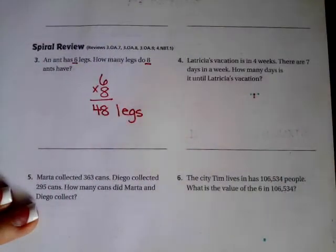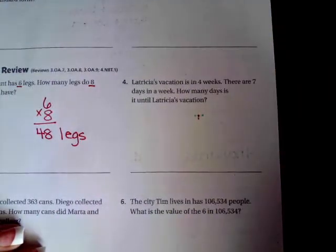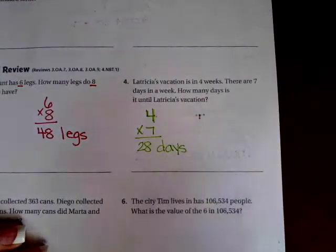Number four: Latricia's vacation is in four weeks. There are seven days in a week. How many days until Latricia's vacation? So four weeks, there's seven days in each week. Seven times four is 28, so 28 days. Again, word problem, word answer. Make sure you label it.